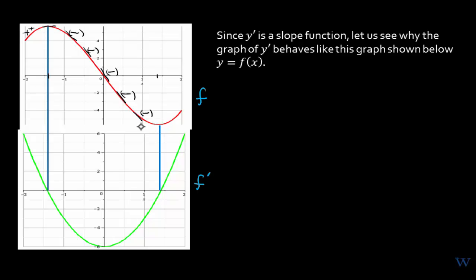Then again we hit a zero slope right about here where we have a bottom or a valley. After that it starts back up and increases again, so the slopes of the lines tangent to the curve are now positive. That means the derivative function will have positive values, which is why the green curve is above the horizontal axis.